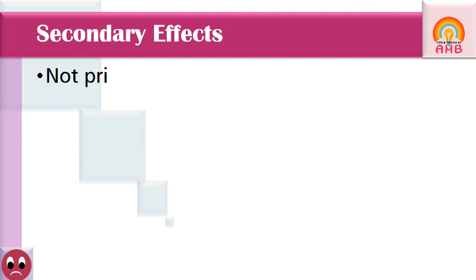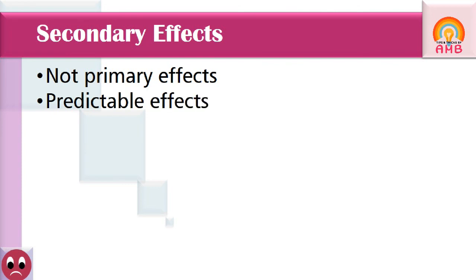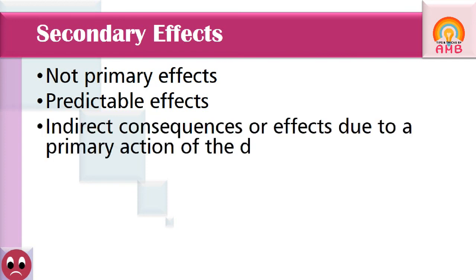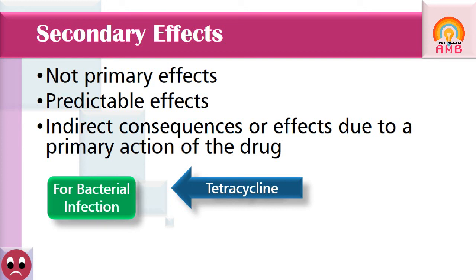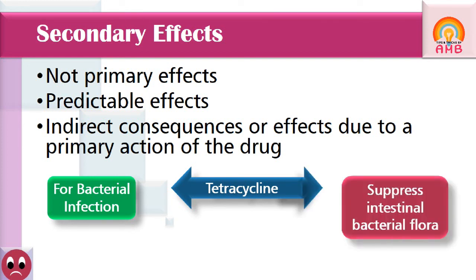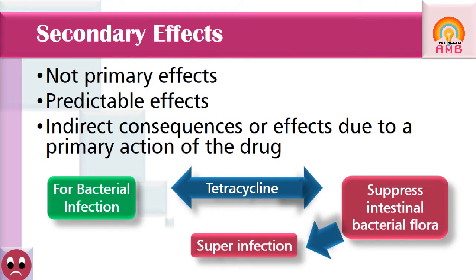Secondary effects are not primary effects of the drug but are also predictable. These are indirect consequences due to the primary action of the drug. For example, tetracycline is used to treat bacterial infection, but along with suppression of infection it also suppresses natural intestinal bacterial flora, which may lead to superinfection. So superinfection is the secondary effect of tetracycline — it arises as a consequence of the primary action.